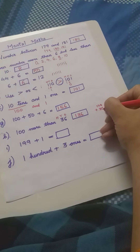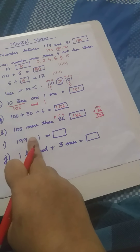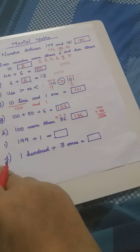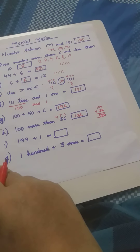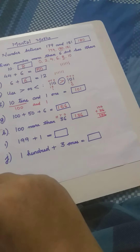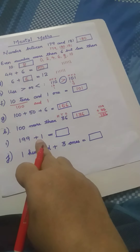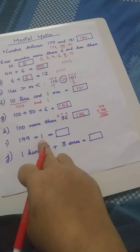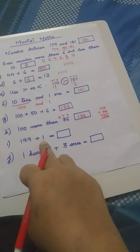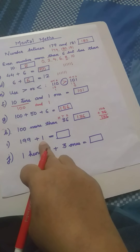Question number nine: 199 plus 1. Plus 1 means the number that comes after, or the next number. So which number comes after 199? Yes, it is 200. You have 199 toffees and I gave you one more — now how many do you have? Yes, it is 200. After 199, 200 comes.